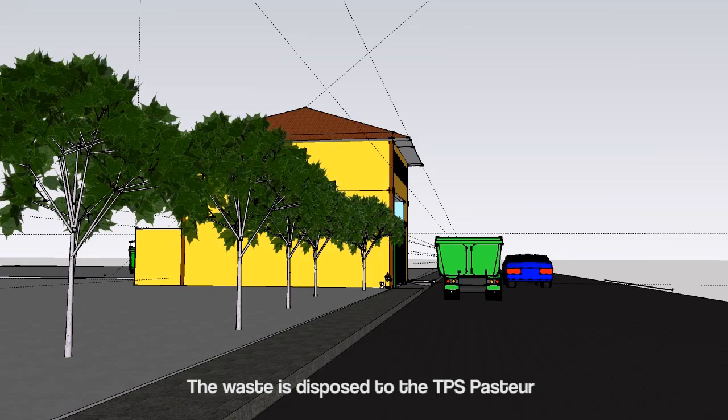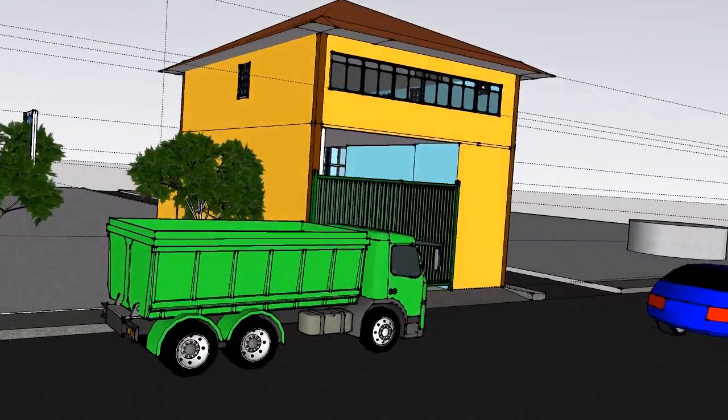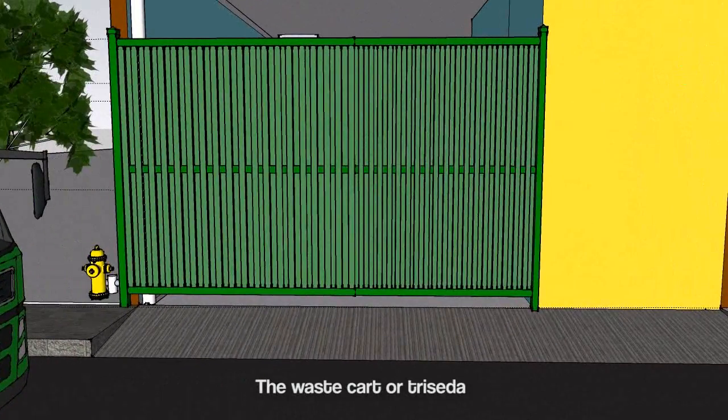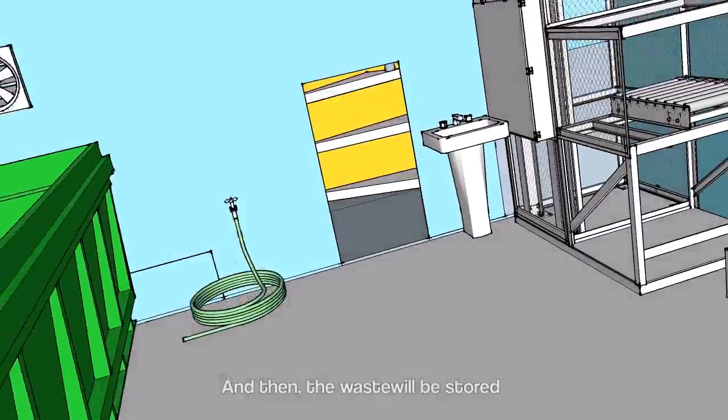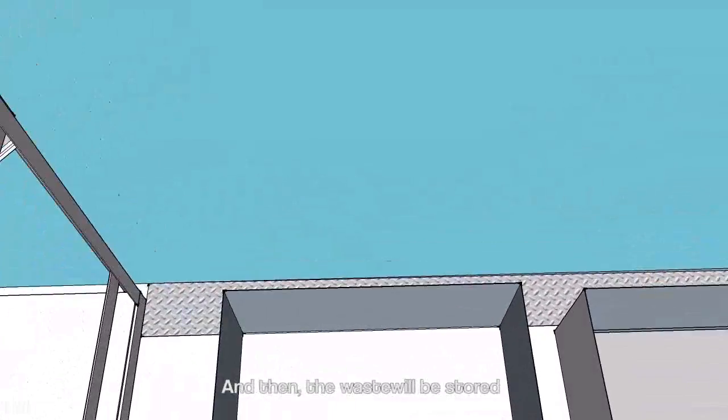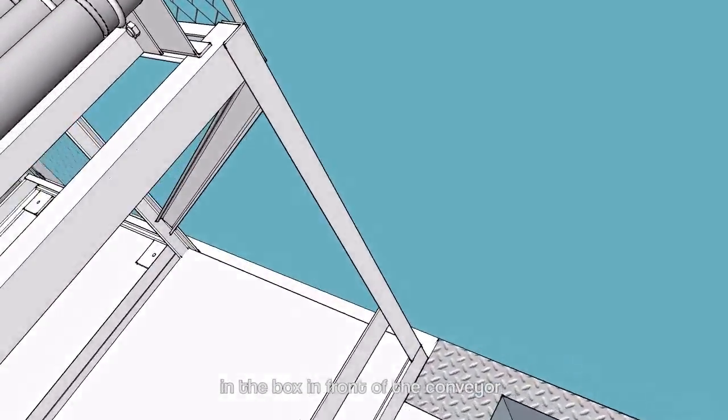The waste is disposed to the TPS facility with a waste cart or trisida. The waste cart or trisida comes into the TPS facility, and then the waste will be stored in the box in front of the conveyor.